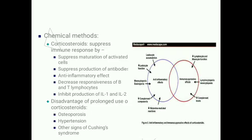Chemical methods for immunosuppression include corticosteroids, which suppress the immune response in several ways: they suppress maturation of activated cells, suppress production of antibodies, have an anti-inflammatory effect, decrease the responsiveness of B and T lymphocytes, and inhibit production of interleukins 1 and 2.